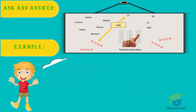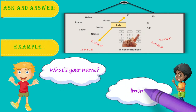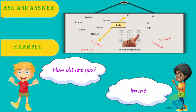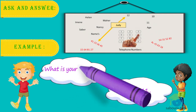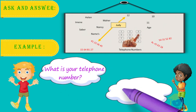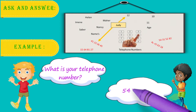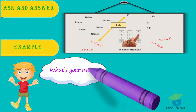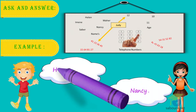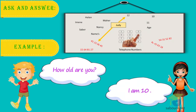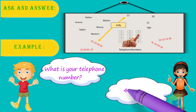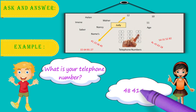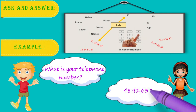The answer. What's your name? Iman. How old are you? I am 11. What is your telephone number? 5-4-3-1-5-2-8-2. What's your name? Nancy. How old are you? I am 10. What is your telephone number? 4-8-4-1-6-3-1-8.